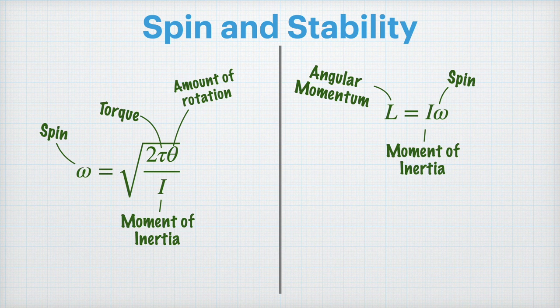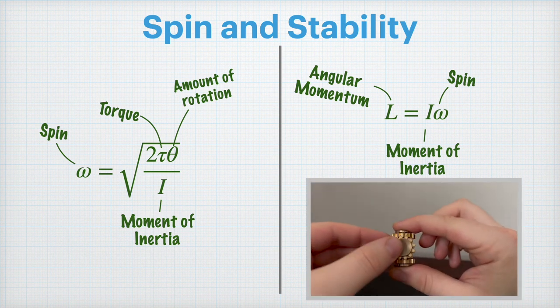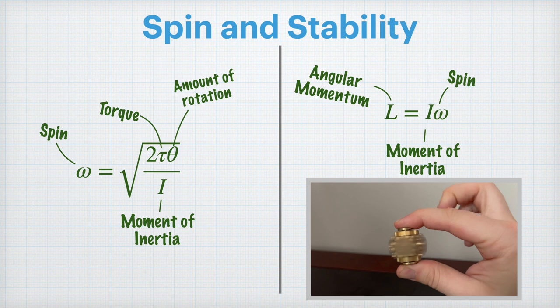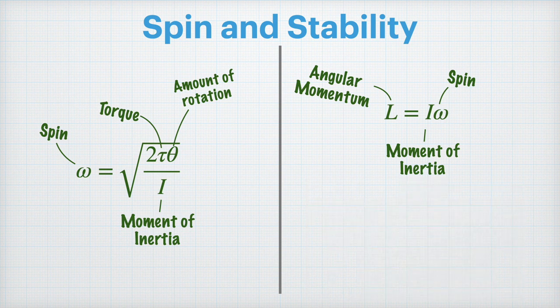Now if you're not familiar with the gyroscopic effect, just grab your favorite fidget spinner, get it spinning real quickly, and then start tilting your wrist. That resistance to the tilting of your wrist is the gyroscopic effect in action. The large amount of angular momentum for something spinning wants to keep it in the same orientation. It resists that change.